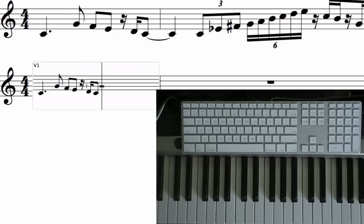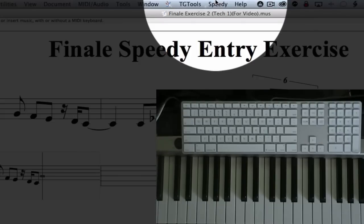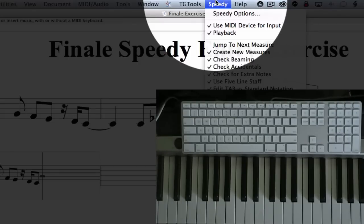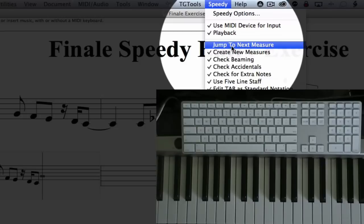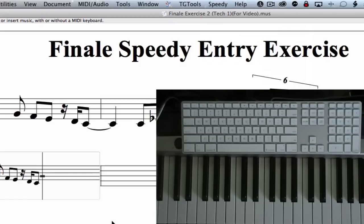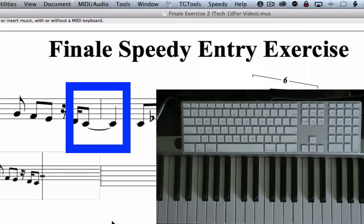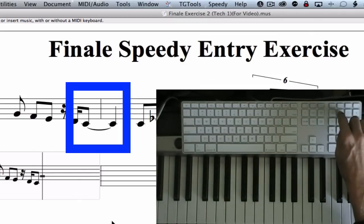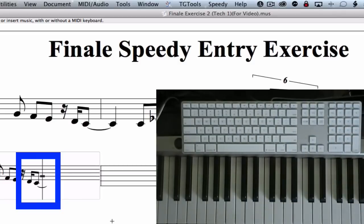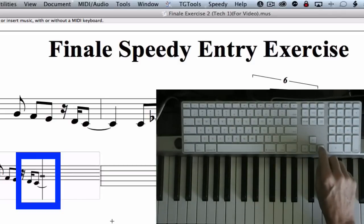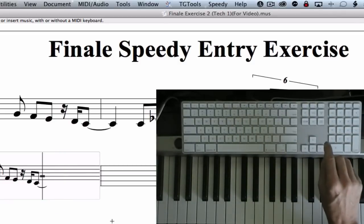For some of you, Finale might jump to the next measure. The reason for that is in the speedy menu, you can uncheck or check 'jump to next measure.' I like to keep this unchecked because, like in this instance, I'm not done yet in this measure because I need to add a tie to the last note. I do this by pressing the equal sign on the number block. And now I move to the next bar with the right arrow key.